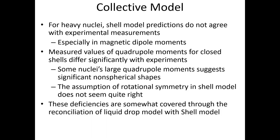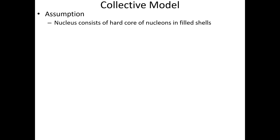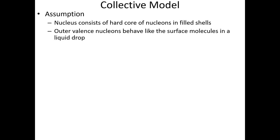These deficiencies are somewhat covered by the reconciliation of the liquid drop model with the shell model — the two models are being reconciliated. The modern result of this reconciliation is what we call the Mottelson and Rainwater collective model in 1953. The main assumption of the collective model is that the nucleus consists of a hard core of nucleons and a filled shell, where outer valence nucleons behave like the surface molecules of a liquid drop.